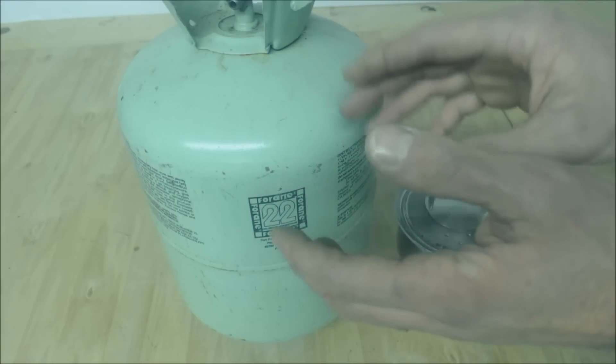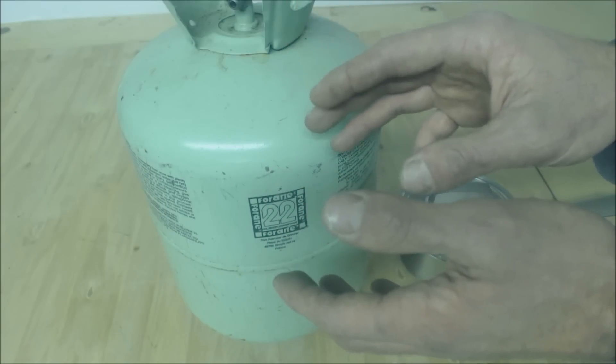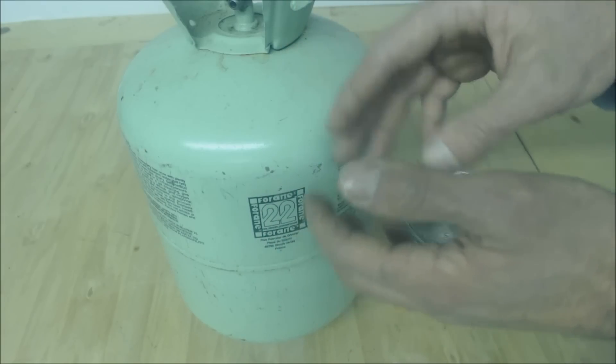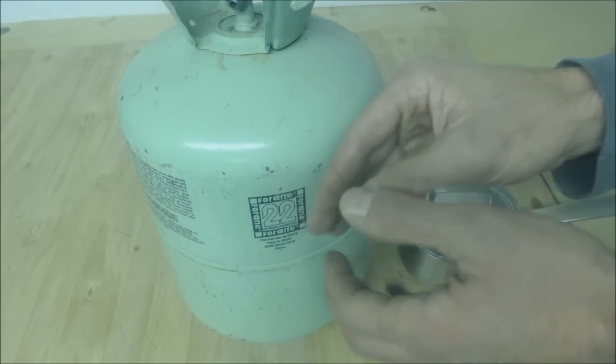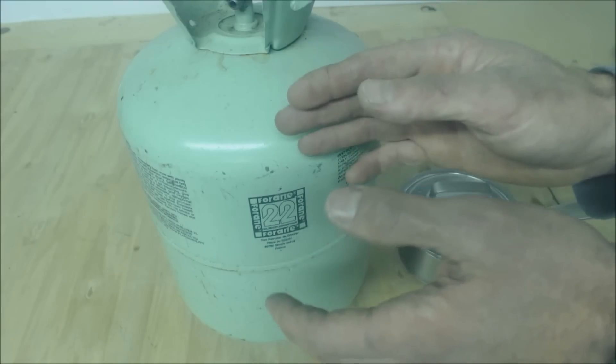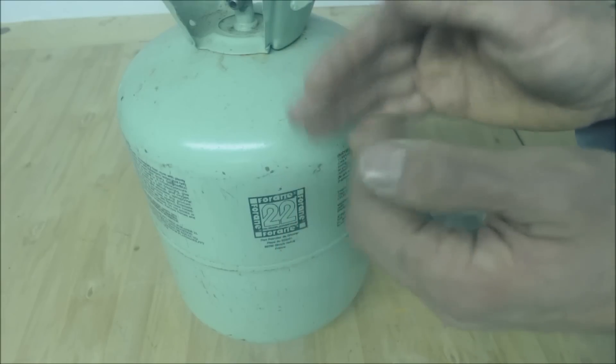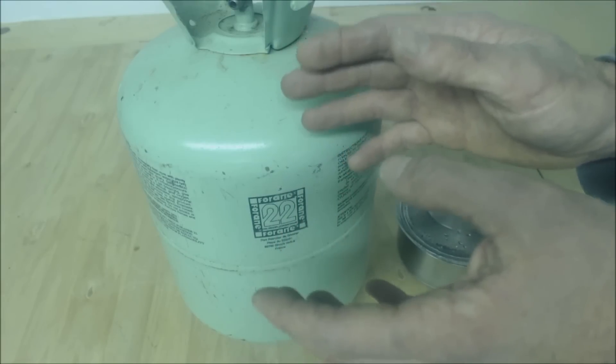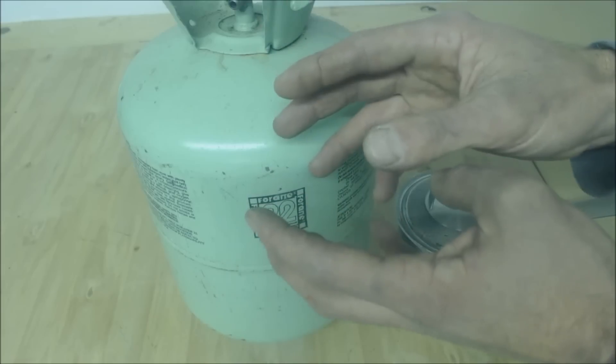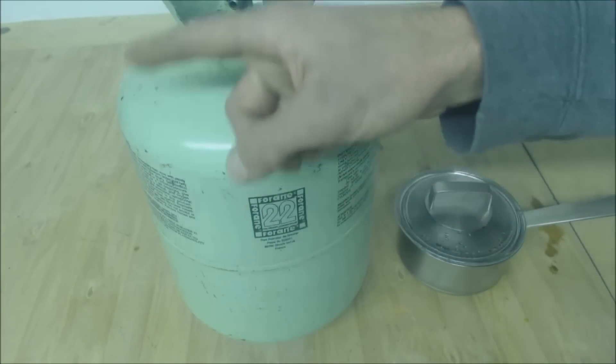At the indoor coil, we're taking high pressure, high temperature liquid refrigerant, coming into the metering device, changing to a low pressure, low temperature liquid refrigerant, and phase changing to a low pressure, low temperature vapor refrigerant. In that time period we are absorbing heat from the inside of the house, and then we can move the refrigerant to the outdoor coil once again to reject it.